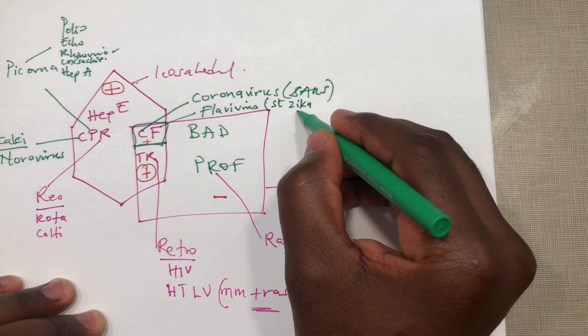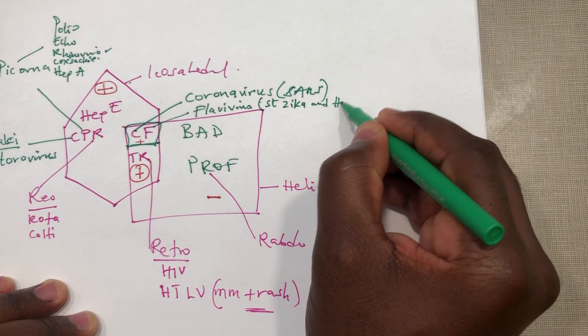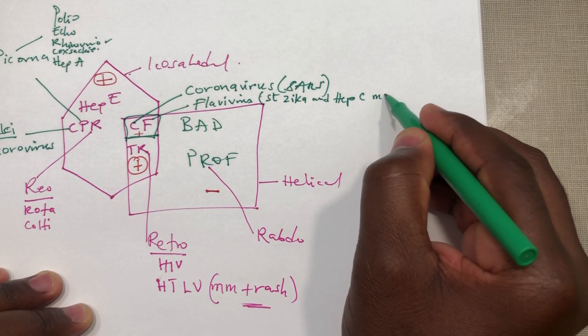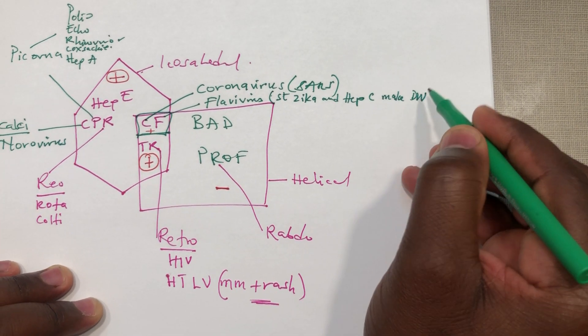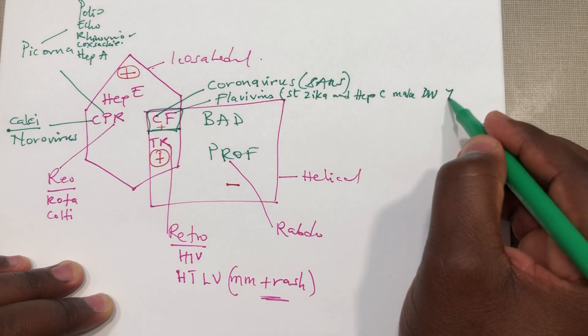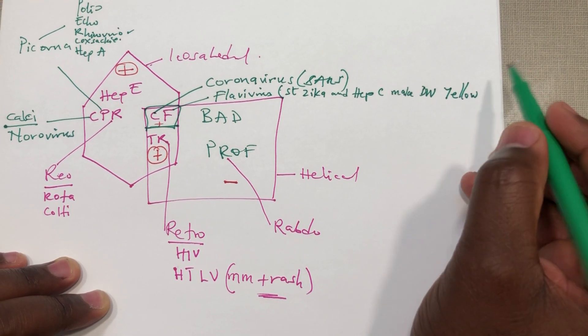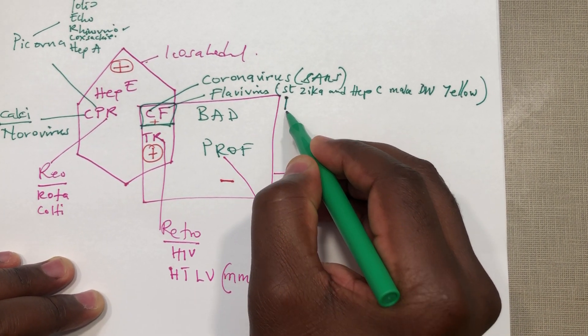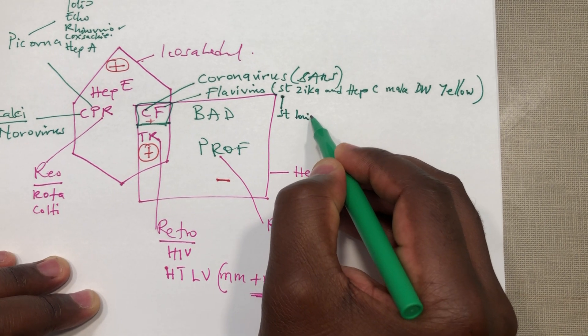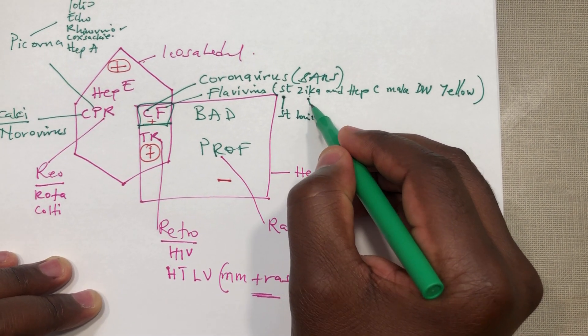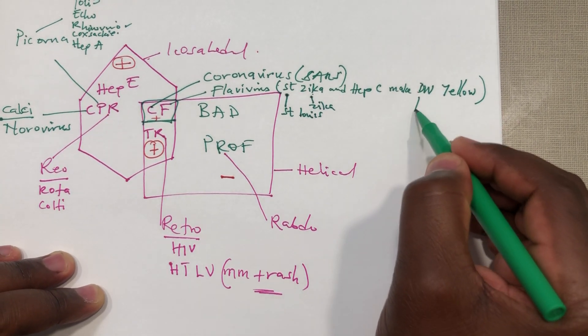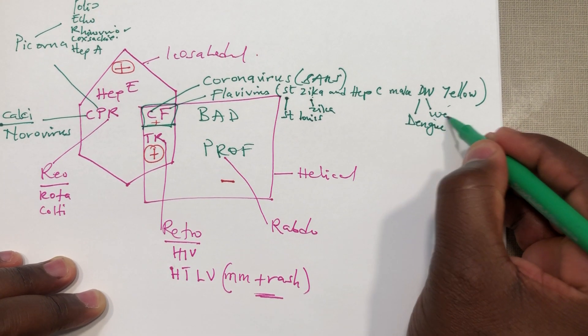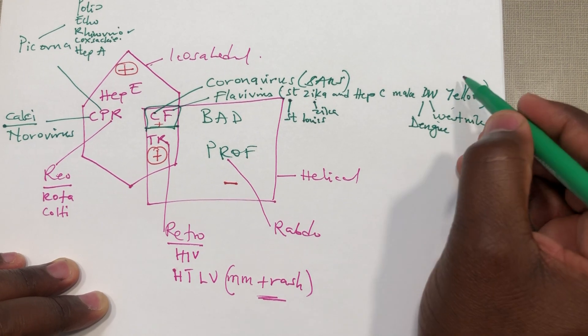If you know DW, it's a German news station or news channel and they make it yellow. So all the viruses: we have the Saint Louis virus, we have the Zika virus, we have hep C, we have dengue which is DW, we have the West Nile, and then we have the yellow fever.